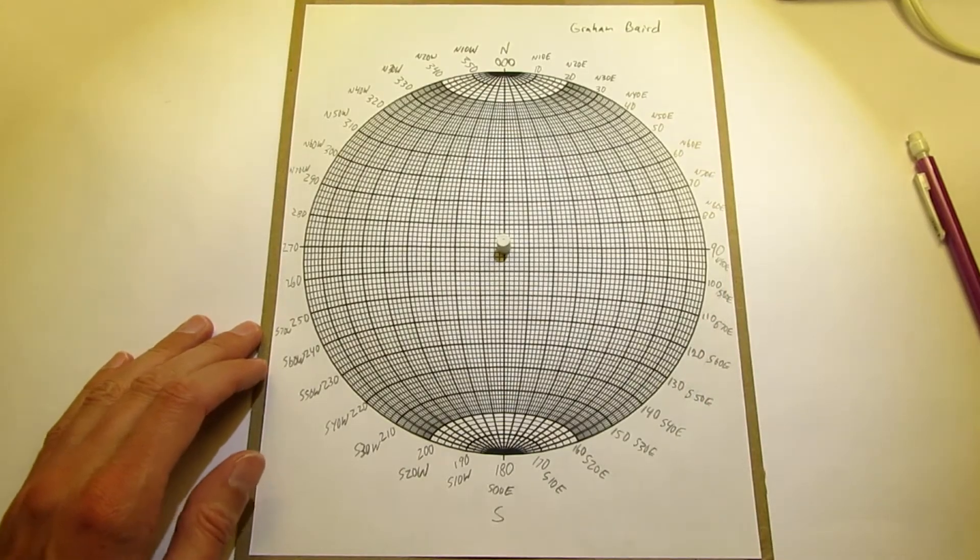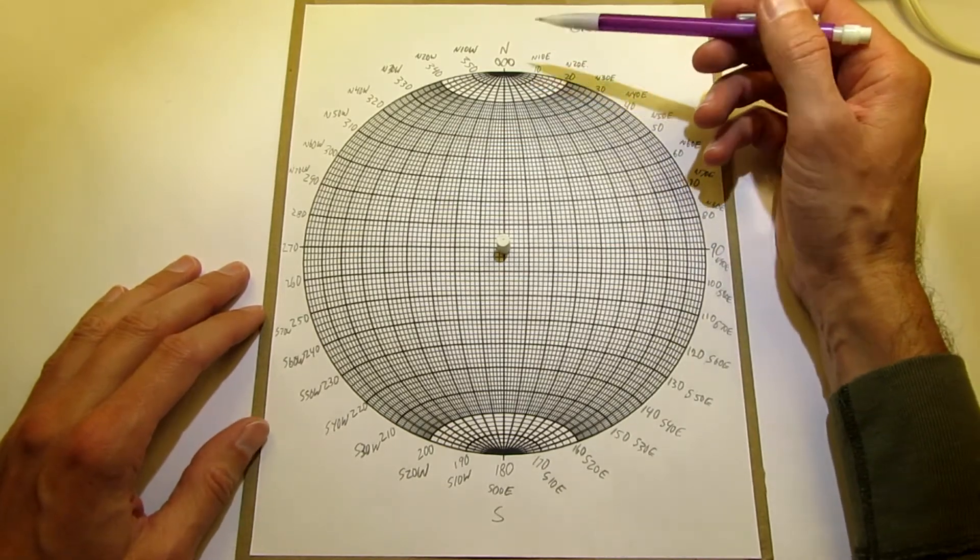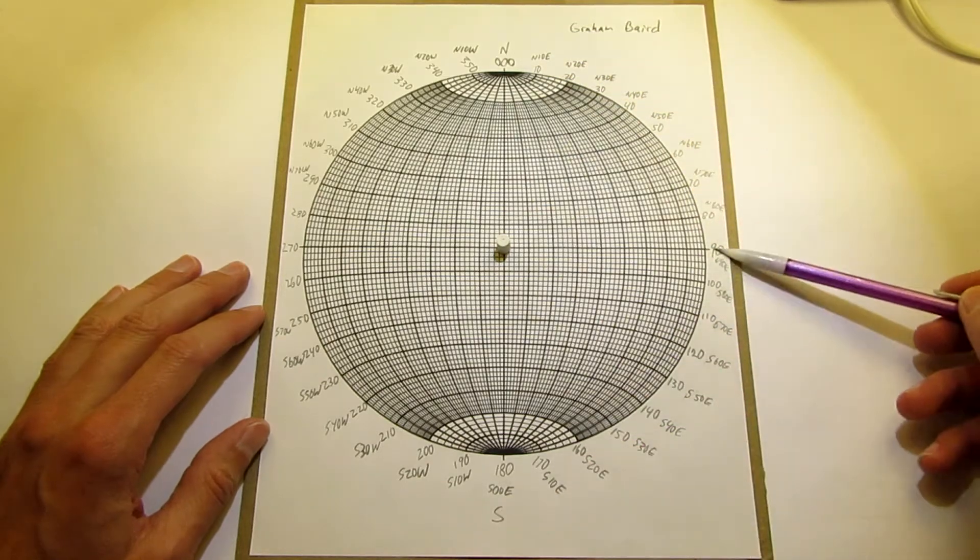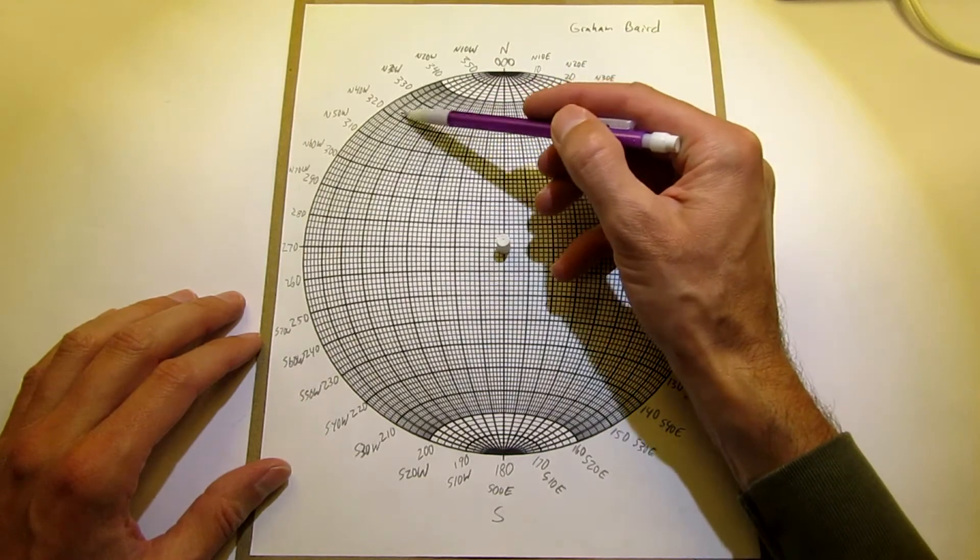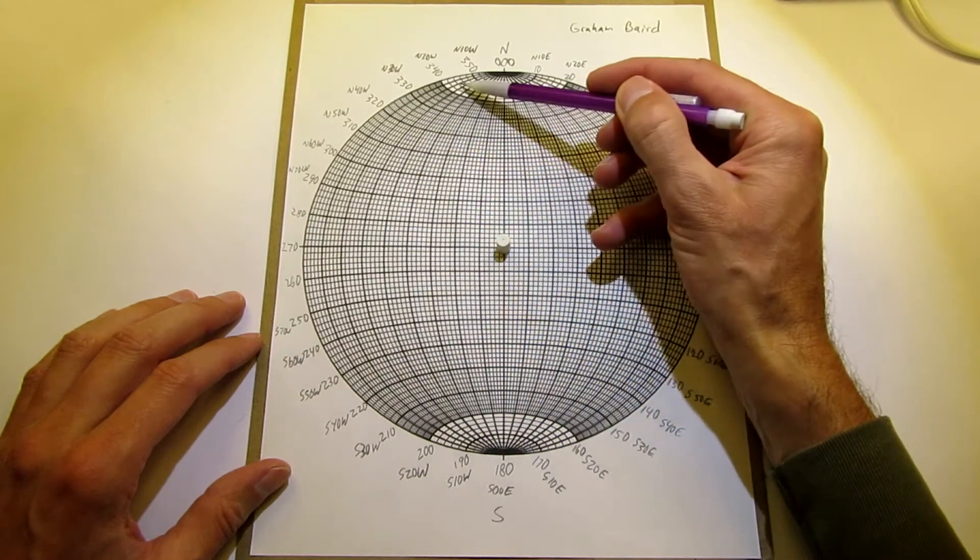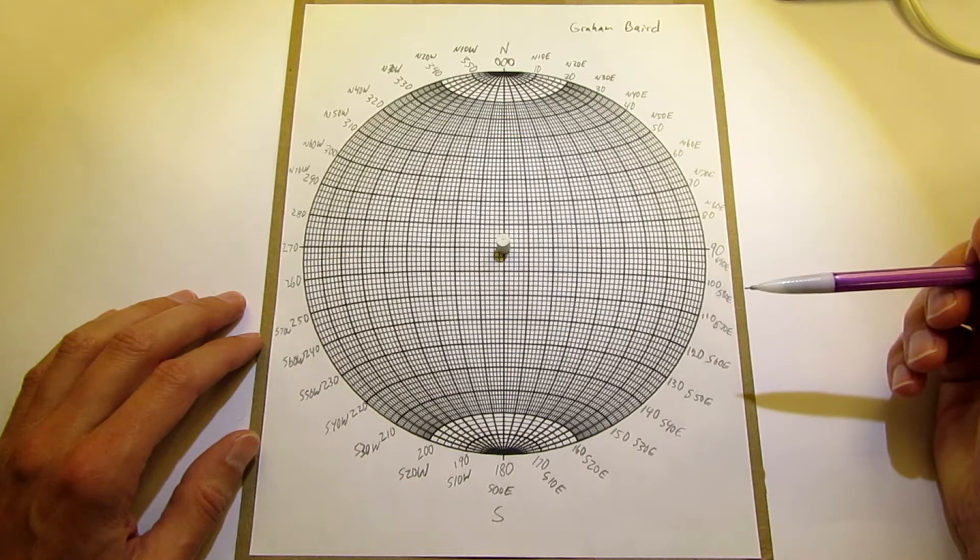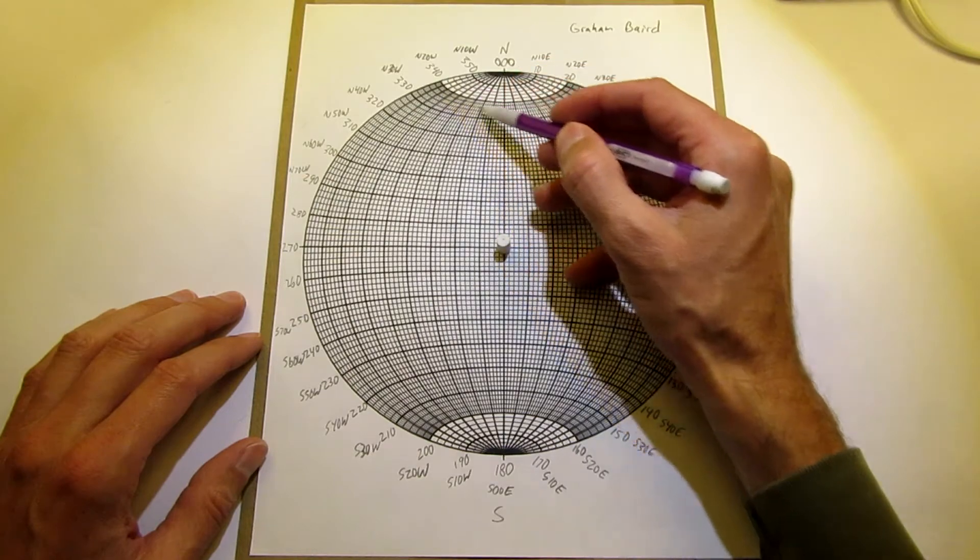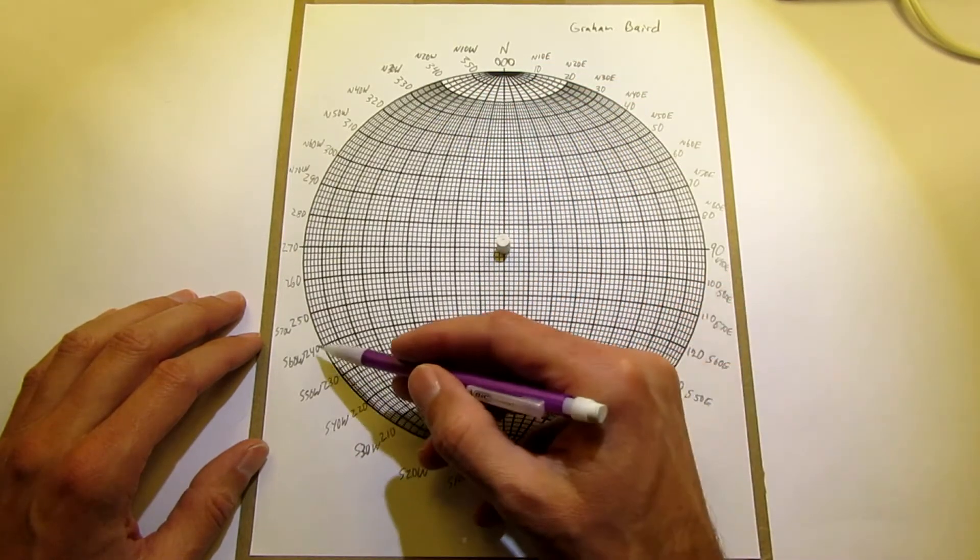So here is the stereonet. Construction of the stereonet is covered in another video, but notice key details: north, south, east, and west. These arc lines running from north to south are called great circles, and that's what we're going to use to trace out our great circles that represent the orientation of planes. We also have small circles, which are these where north and south are the center of those arc circles.